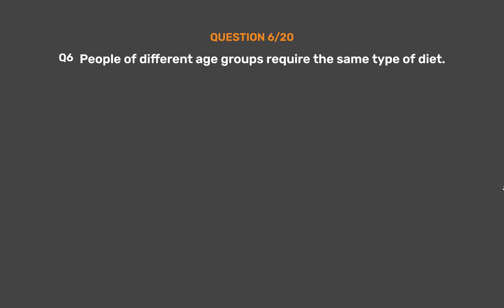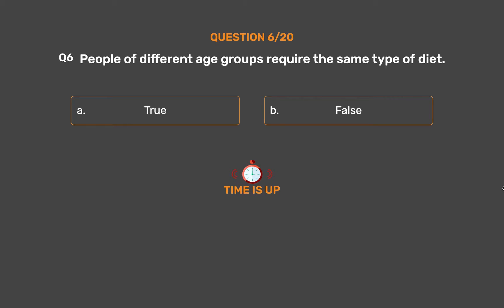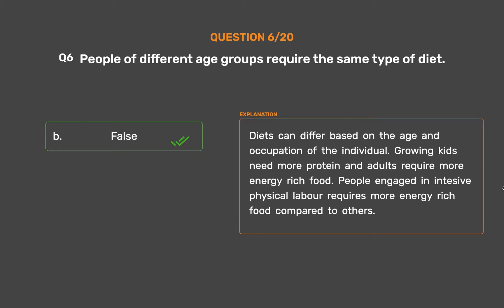Question number 6. People of different age groups require the same type of diet. Option A - True. Option B - False. The correct answer is Option B - False. Diets can differ based on the age and occupation of the individual. Growing kids need more protein and adults require more energy-rich food. People engaged in intensive physical labor require more energy-rich food compared to others.